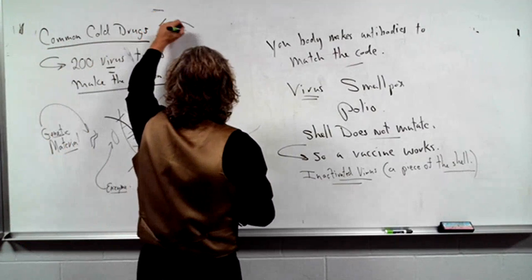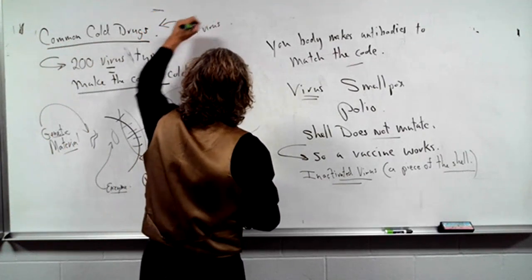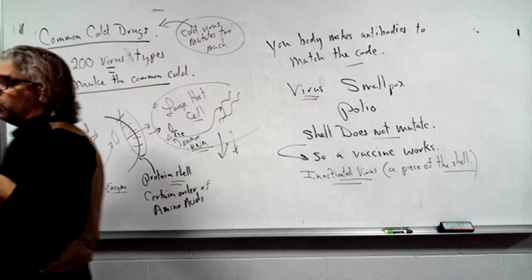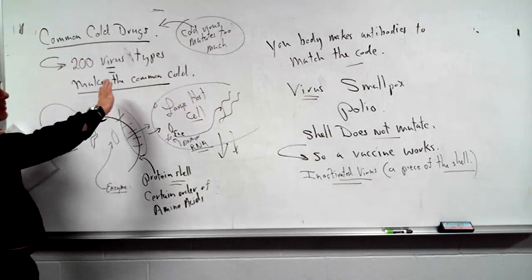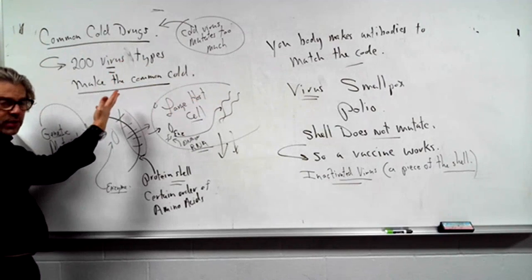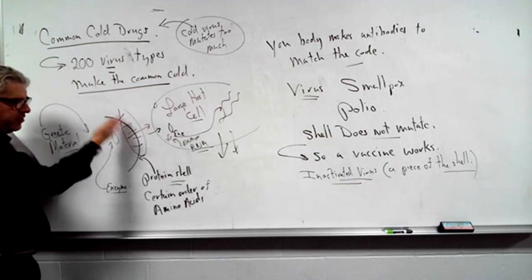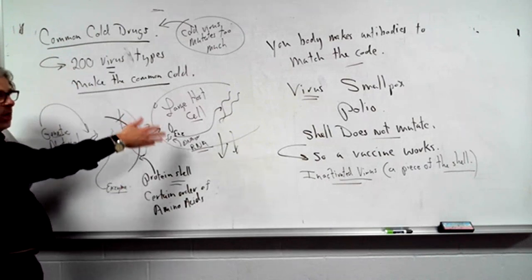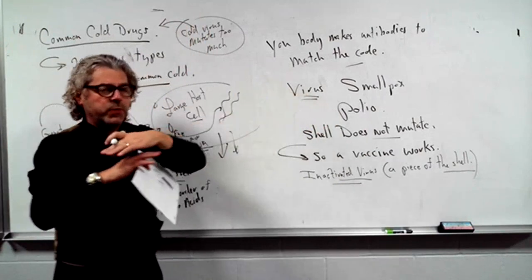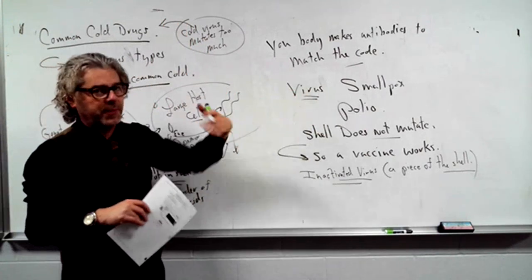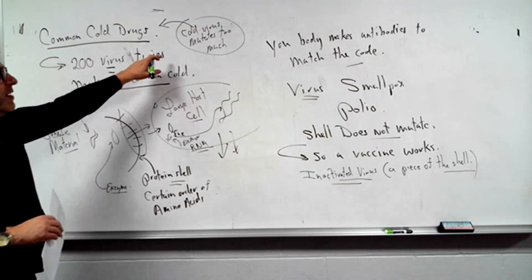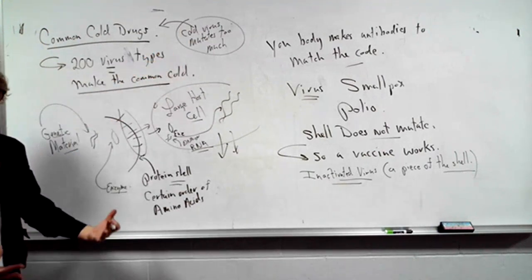Let's say you have smallpox or polio. So, the shell does not mutate. Or not very much. So, a vaccine works. Now, what is a vaccine? Well, a vaccine could just be a piece of the shell of the virus. So, you put some inactivated virus. Inactivated. Let's think of it as like a piece of the shell. You've got this piece of the shell that goes into your body with the vaccine. Your body thinks it's an attack. So, your body makes all these antibodies to pull these pieces out. And your body learns that this is a virus. Then, if you get attacked with polio or smallpox, your body pulls it out because it has memory cells. It's a deep discussion. It's the basic immunity that the body deals with. Okay? Problem is, cold virus mutates too much.